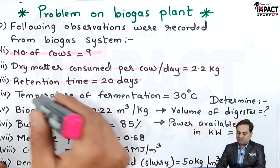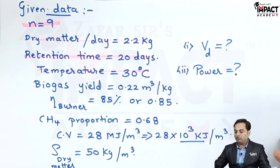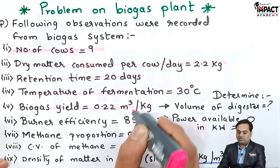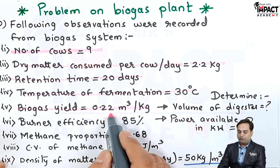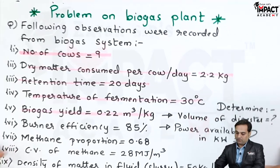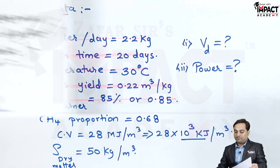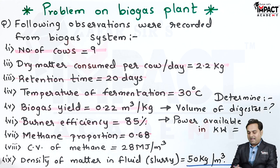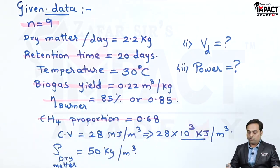Next, the retention temperature is given as 30 degrees Celsius — the temperature of fermentation. It means we do not have to supply any external heat. Next, biogas yield is 0.22 meter cube per kg, meaning when we supply 1 kg of dry matter or cow dung, in place of that we are getting 0.22 meter cube of biogas. Methane proportion is 0.68, meaning the biogas will contain some other gases as well, but the major proportion is methane which is 68 percent.